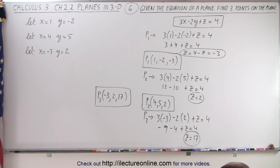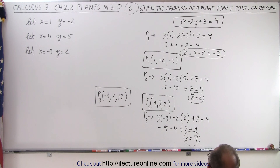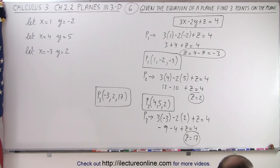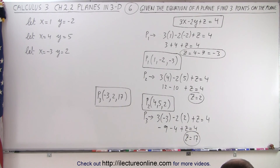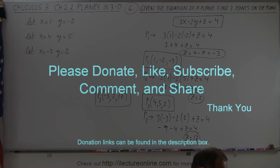Let me verify these points are correct: point 1 is (1, -2, -3); point 2 is (4, 5, 2); and point 3 is (-3, 2, 17).